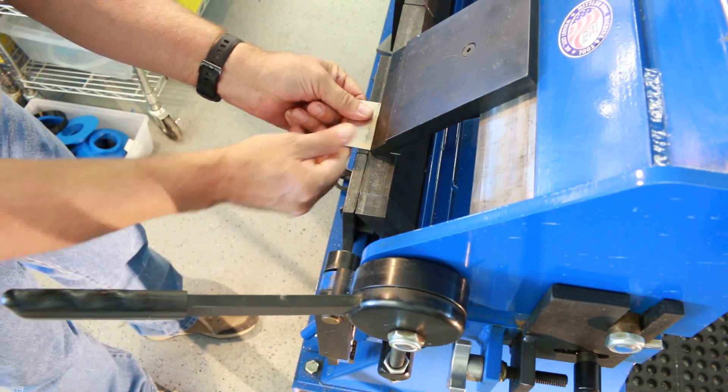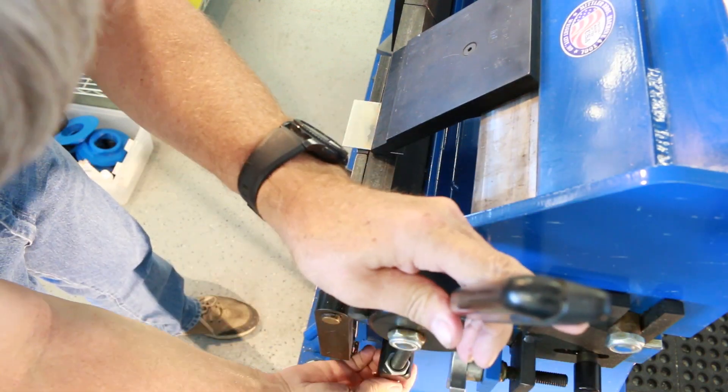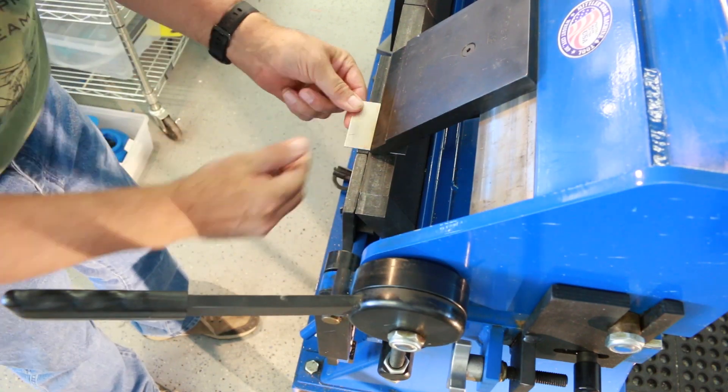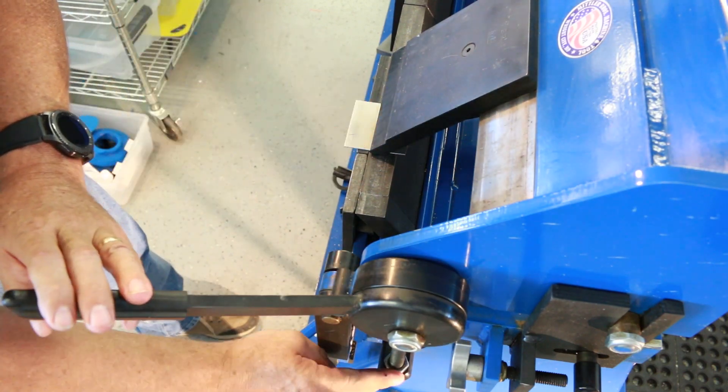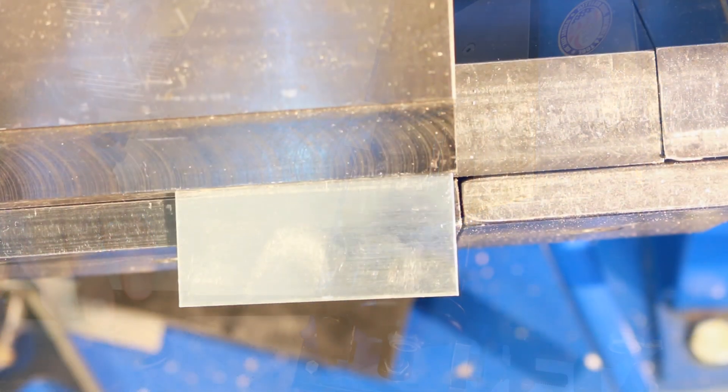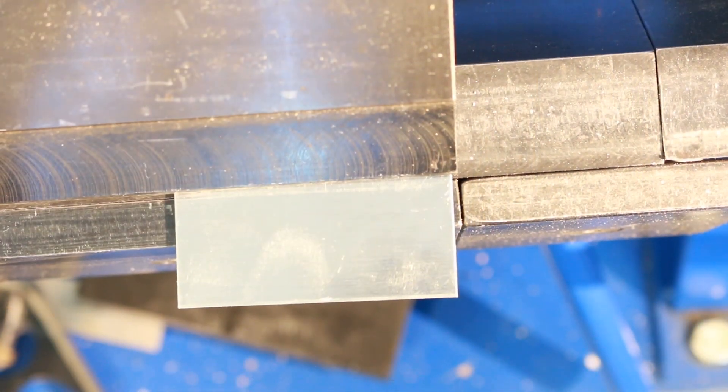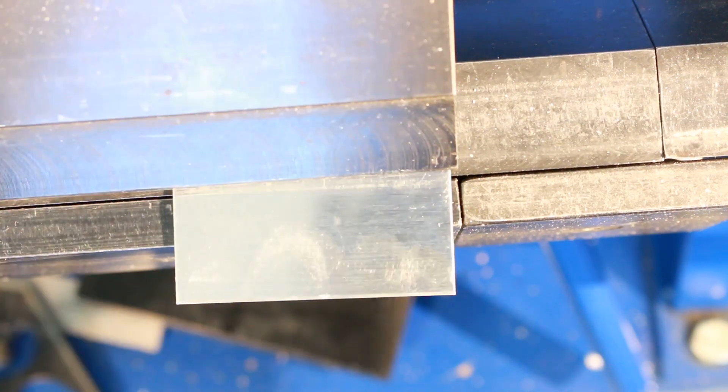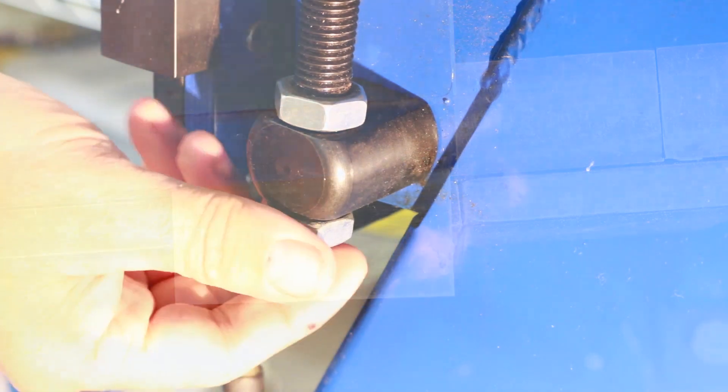To start with, clamping pressure should be only enough to keep the material from slipping during the bend. One of the biggest and most common mistakes made is using excessive clamping pressure. Excessive clamping pressure can cause the fingers to shift forward, leaving inadequate space for the aluminum during the bend.